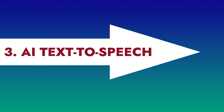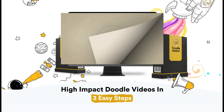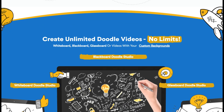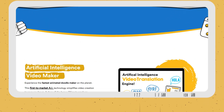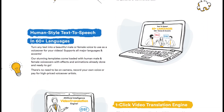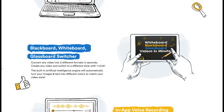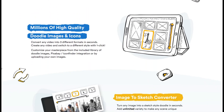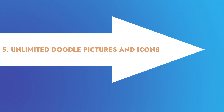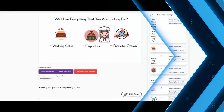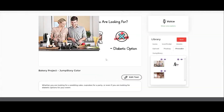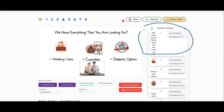Three: AI text-to-speech. With DoodleMaker AI, you can turn your script into a voiceover that sounds naturally human, just like you wrote it. Four: built-in voice recording. If you want to record your own voiceover, you can do so with DoodleMaker's built-in voice recording feature. There is also the option to upload a previously recorded audio file. Five: unlimited doodle pictures and icons. DoodleMaker graphics and videos can be used to personalize your animation videos, making your videos unique with better conversion rates.